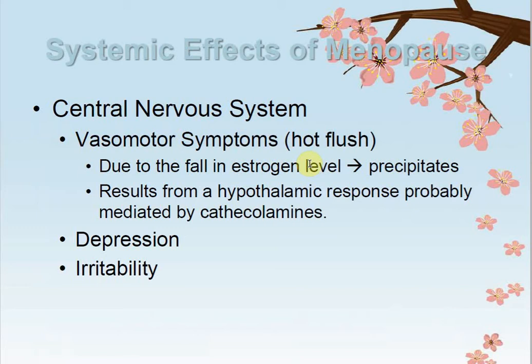Systematic effects of menopause: In the central nervous system, vasomotor symptoms appear, such as hot flushes — due to blood circulation changes or nerve impulse disruption. When estrogen levels fall, symptomatic changes occur in the patient, including sensations. These result from hypothalamic response, probably mediated by catecholamines, causing hormonal imbalance in the hypothalamus.